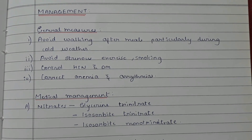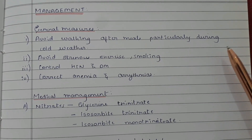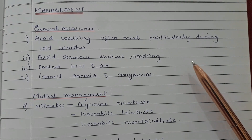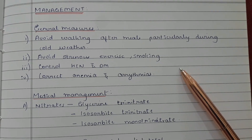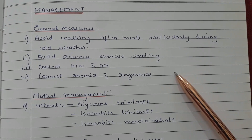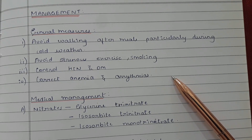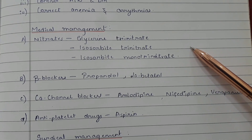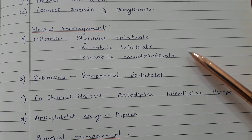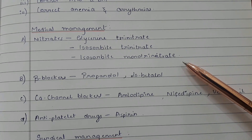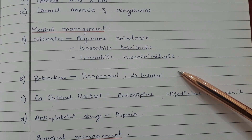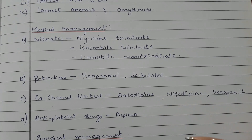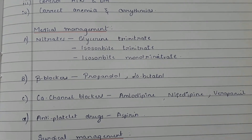General management measures include avoiding walking after meals particularly during cold weather, avoiding strenuous exercises, and avoiding smoking. Control hypertension and diabetes mellitus, and correct anemia and arrhythmias. Medical management includes nitrates such as glyceryl trinitrate, isosorbide dinitrate, and isosorbide mononitrate. Beta blockers like propranolol and labetalol, calcium channel blockers like amlodipine, nifedipine, and verapamil, and antiplatelet drugs like aspirin.